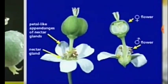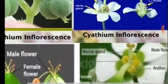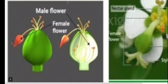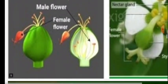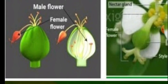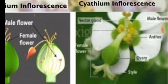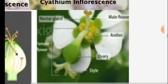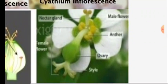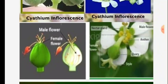In Cyathium, the female flower and the male flowers are present. See the position of the male flowers at the base of the stalk, particularly around the thalamus. Here you are observing the LS of the male and female flowers and the entire flower condition. The nectary gland is present at the top in Euphorbia pulcherrima.